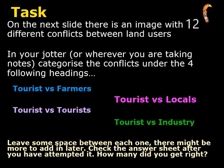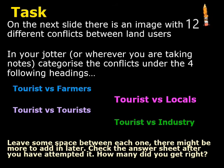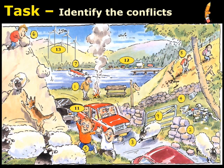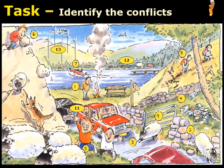In whatever you're taking your notes, leave some space between each heading as there might be more to add later. Then check the answer sheet after you've attempted it. Here's the image with the 13 different conflicts — write the numbers in your jotter under the different headings and pause the video as long as you need to attempt this work.